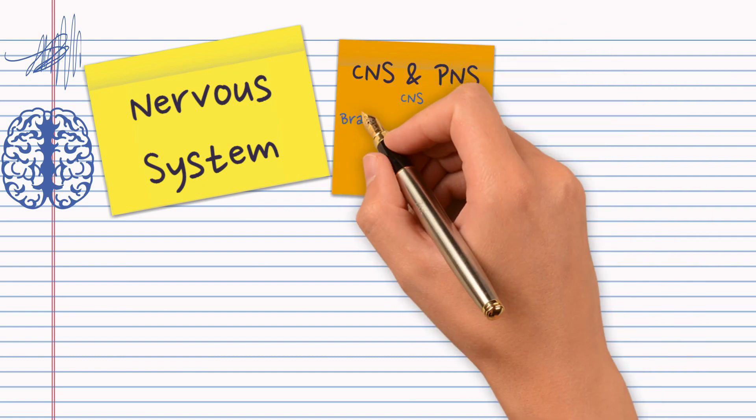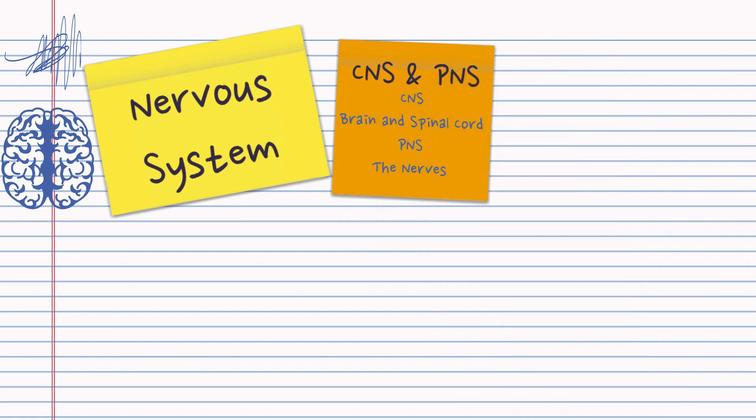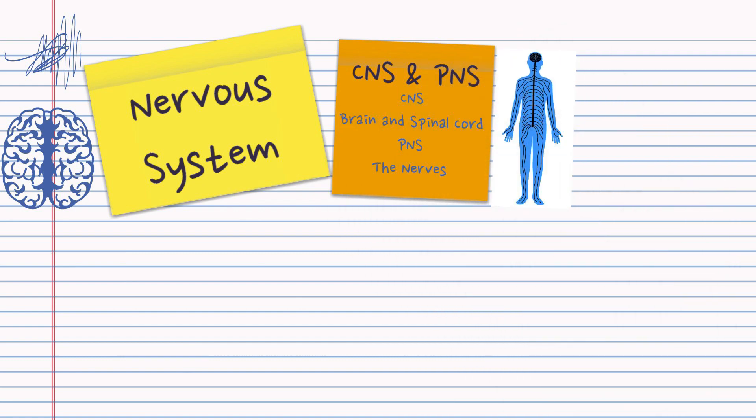So we know there's the central nervous system and the peripheral. Central is the brain and the spinal cord and the peripheral is the nerves.